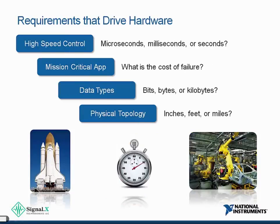Once you've decided to use distributed control, certain requirements will drive hardware and software choices. Looking at key requirement areas — speed, type of data, physical topology — these can be thought of as questions to ask yourself as you design your system. Do I measure my control loop rates in microseconds, milliseconds, or seconds? If I am trying to span a wind farm, do I measure my physical topology in inches, feet, or miles?